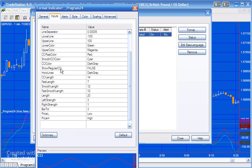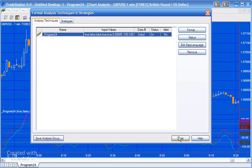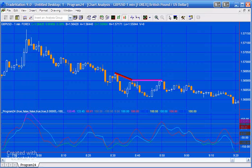And then one other one I just want to highlight, and that is the ShowRegularCCI, which I've got set to false. If you set this to true, you'll also see plotted on the chart the non-smooth CCI as well, although the program does not use that in its calculation of the divergences.